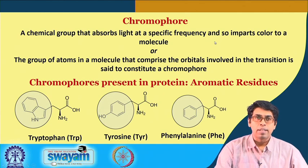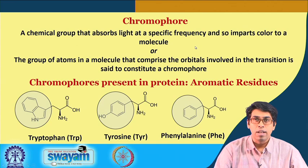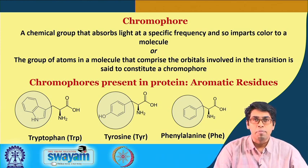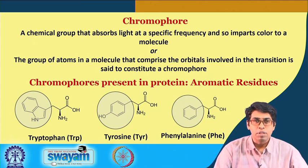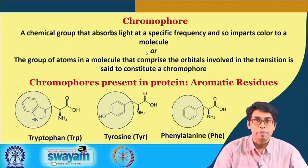One of the important concepts introduced this week was that of a chromophore. A chromophore is a chemical group that absorbs light at a specific frequency and so imparts colour to a molecule. Whenever we think of colour we think of it in the visible range, but a chromophore can also be something that will not give a colour in the visible range — it can emit energy at a range beyond the visible range. In this case we saw absorption spectra collected in the UV range. A chromophore is a group of molecules that comprise the orbitals involved in the transition.